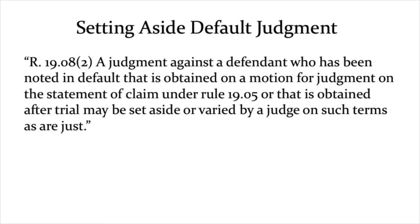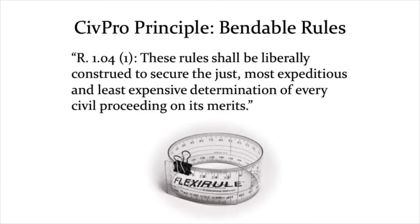This is another example of the liberality of the rules of civil procedure — the sense that the rules are kind of bendable. Every statement of claim says in huge block letters: if you do not defend against this, default judgment can be taken against you and we're going to come and take your money with no further chance to deal with this. And yet the defendant does nothing, the plaintiff gets that default judgment, and the defendant can still come back and say: I want that default judgment set aside.